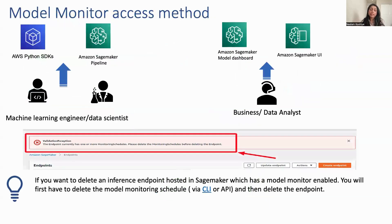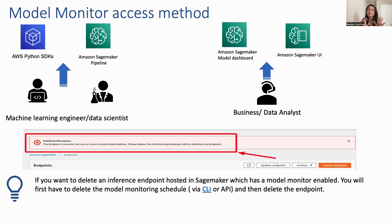In terms of access mechanisms, there are different options by persona. The AWS Python SDK, CLI, and SageMaker Pipelines are preferred methods for machine learning engineers or data scientists, whereas business or data analysts prefer the SageMaker UI. There are some limitations when using the UI. For example, if you want to delete an inference endpoint hosted in SageMaker that already has Model Monitor enabled, you must first delete the Model Monitoring Schedule via CLI or API — you can't do it from the console. You would get an error, so you have to use CLI or API to delete it first.